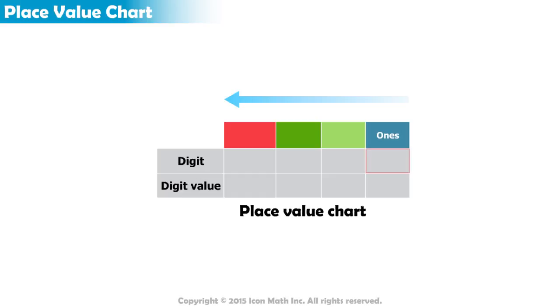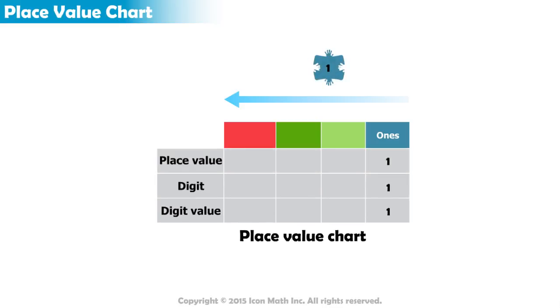If we put any digit here, its value will be equal to that digit itself. For example, a zero in the ones place means we have no units. A one means we only have one unit. And so on. So the value of this place is equal to one.